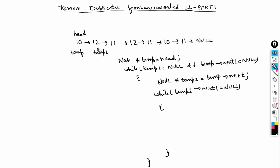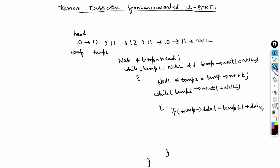My temp2 starts here. I need to compare the data of temp and temp2 — if they are equal, remove temp2; otherwise proceed further. If temp->data is not equal to temp2->data, then I do temp2 = temp2->next.